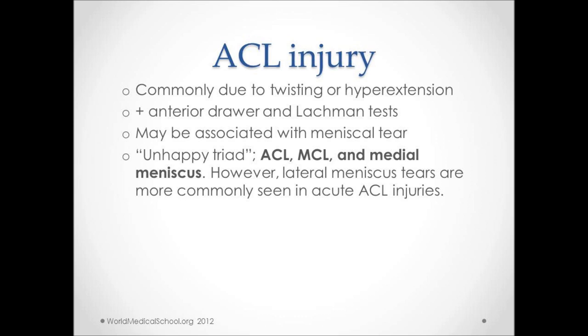The anterior drawer test is performed with the patient supine with the hip flexed at about 45 degrees and the knee at 90 degrees. The examiner can sit on the patient's foot to stabilize it, then place hands on the upper calf and firmly pull the tibia forward. Movement of about five millimeters or more is considered a positive test. It's important to compare this with the other knee to determine if there is general laxity or a true positive.